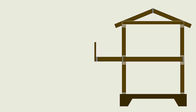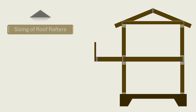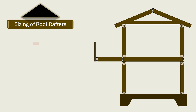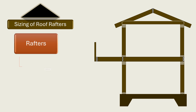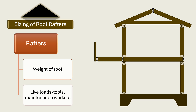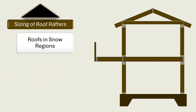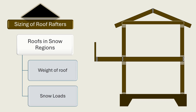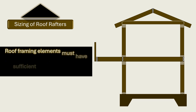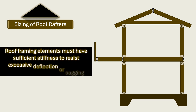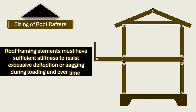When designing the structural framing of a house based on conventional framing provisions, one of the key elements to get right is the sizing of roof rafters. Rafters must be strong enough to support the weight of the roof itself and loads such as the weight of construction workers and their tools. For roofs built in regions with snow, the roof must be able to support its own self-weight and snow loads. Additionally, roof framing elements must have sufficient stiffness to resist excessive deflection or sagging during loading and over time.